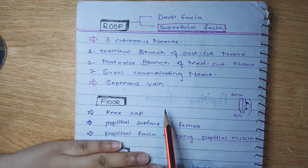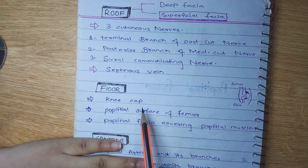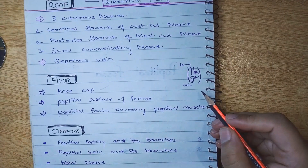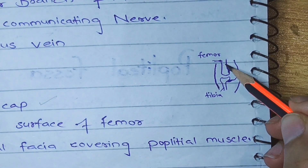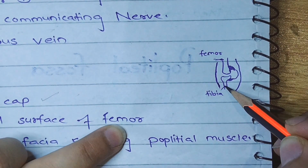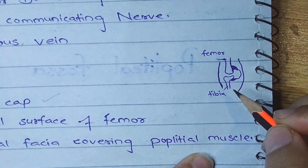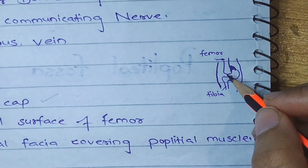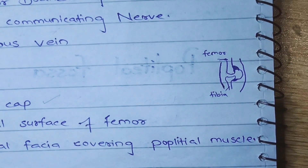The floor of the popliteal fossa is the posterior surface of the femur and the kneecap. The popliteal fascia covers the popliteal muscle, so this is the popliteal fascia forming the floor.